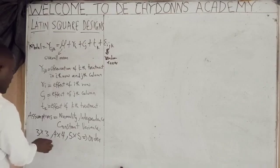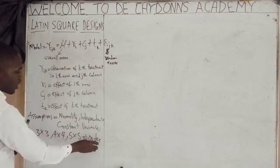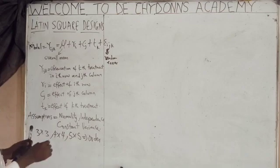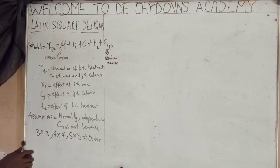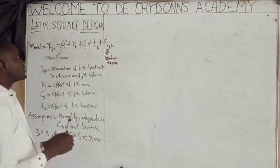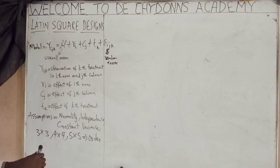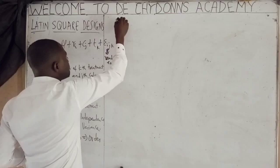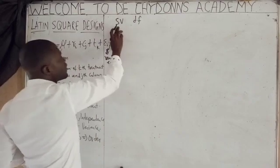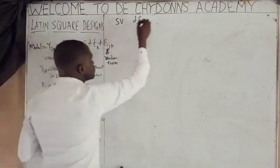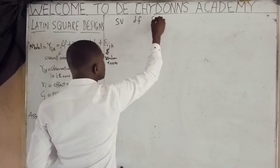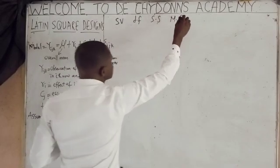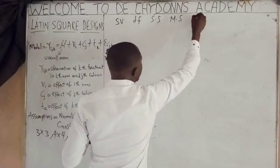Three by three, four by four, five by five are called the order or dimension of any given Latin Square design. We now go to the Latin Square ANOVA table, which is made up of: SV (source of variation), degree of freedom, sum of squares, mean of squares, and F-ratio.